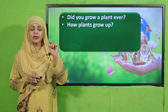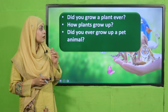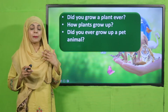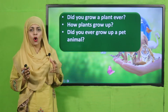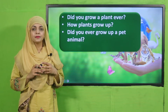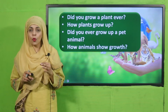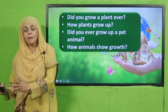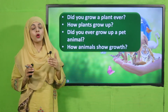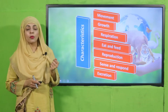Have you ever grown a pet — a dog, cat, or chicken — and observed its growth? We will also look at how animals show growth. Animals grow from babies to adults. That is how both plants and animals show growth.